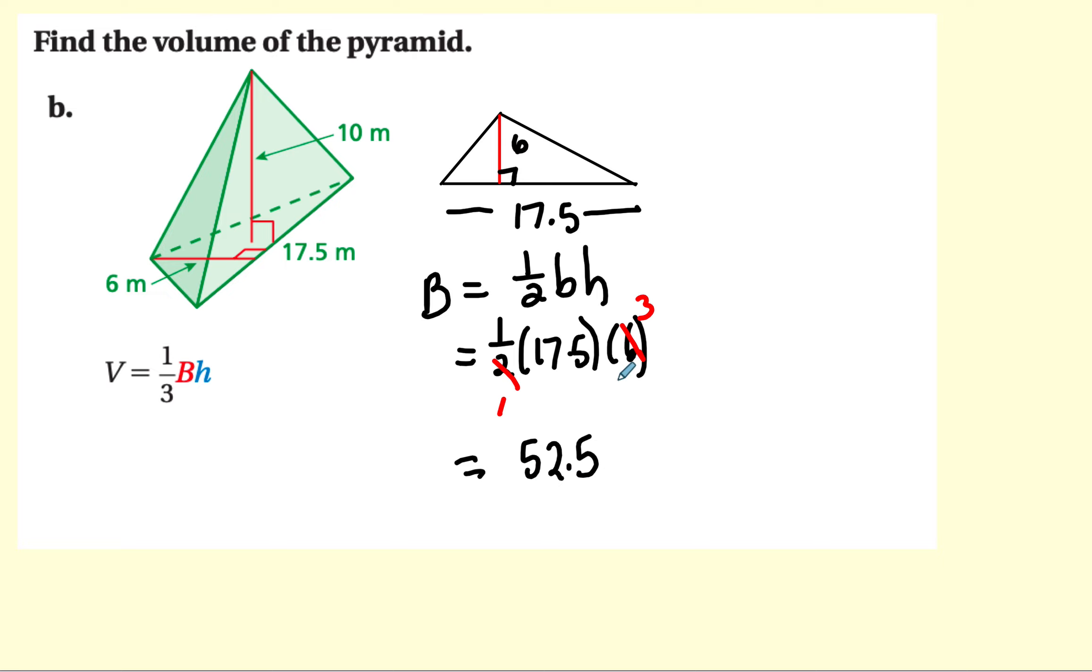Now that's only the area of the base. Now I can proceed and find the volume. Volume is equal to 1 third the area of the base times the height. The area of the base we figured out is 52.5. And the height right here is being told to us is 10. So let me go ahead and put that in the calculator. 525 divided by 3. And the answer is 175 in cubic meters.